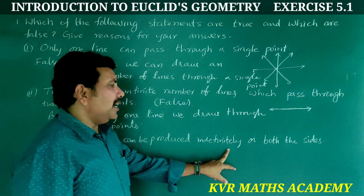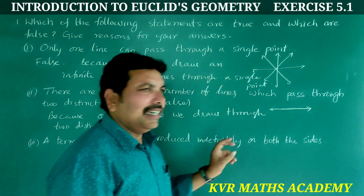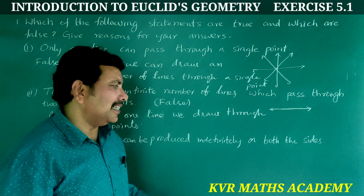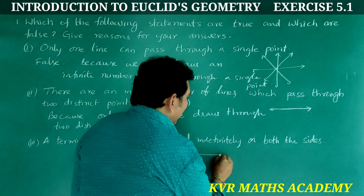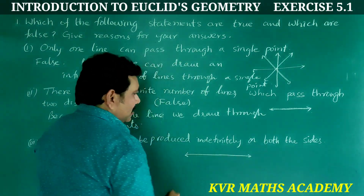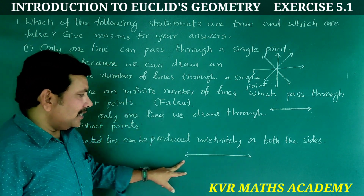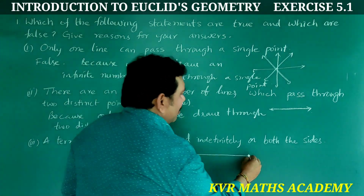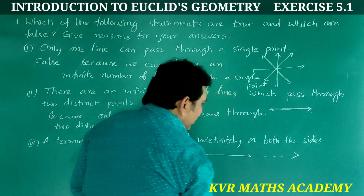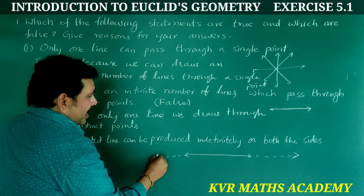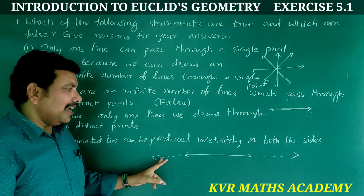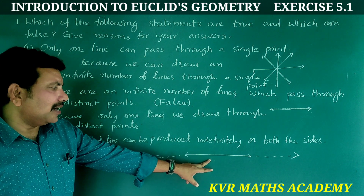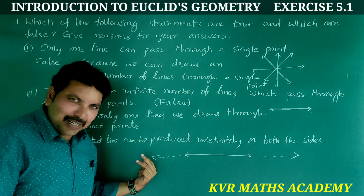Third statement: A terminated line can be produced indefinitely on both sides. Yes, the given statement is true, because we can produce a terminated line indefinitely on both sides.